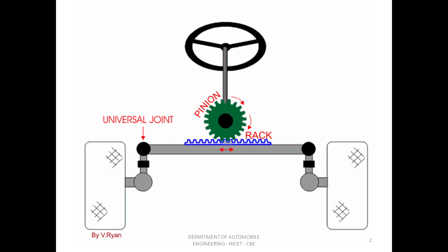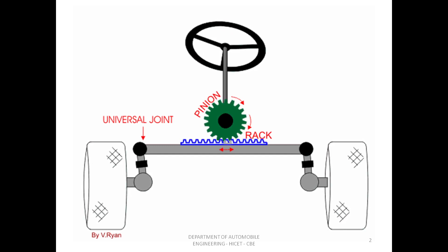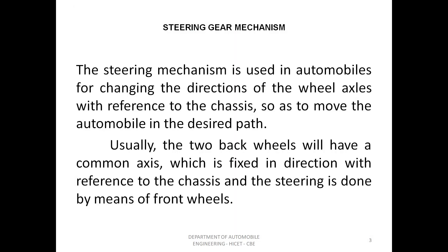The steering system provides a directional change in the movement of an automobile and maintains a position as per the driver's decision without much strain. The steering mechanism is used in automobiles for changing the directions of the wheels and axles with reference to the chassis, so as to move the automobile in the desired path. Usually the two back wheels have a common axis which is fixed in direction with reference to the chassis, and the steering is done by means of front wheels.